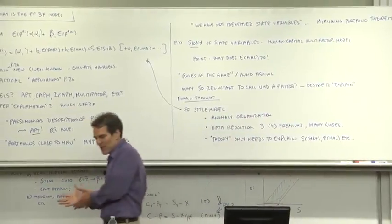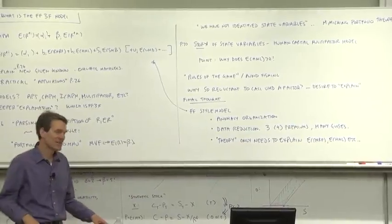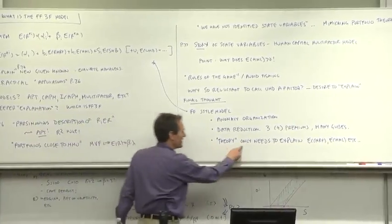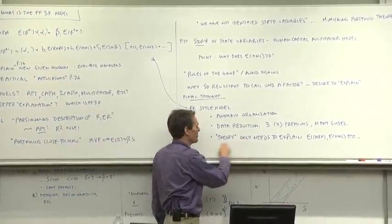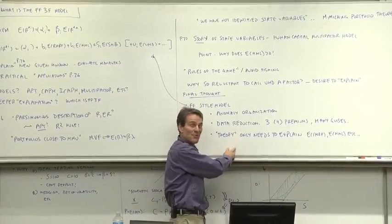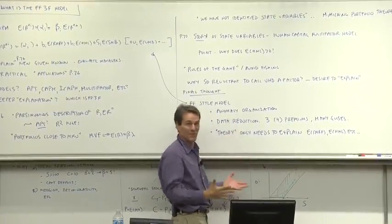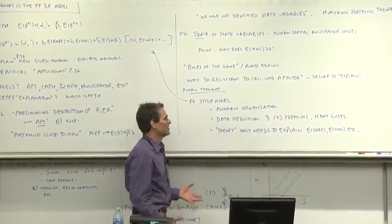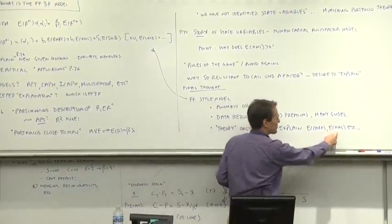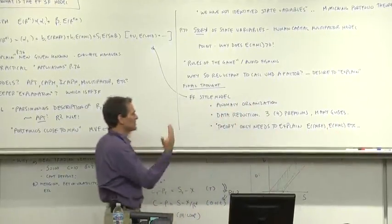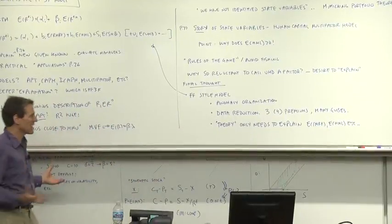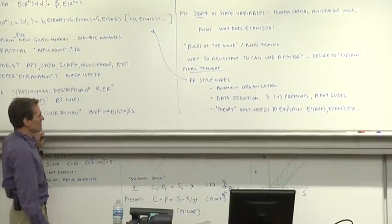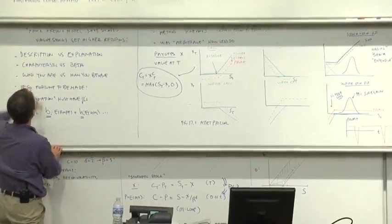A theoretical model doesn't have to explain all 25 portfolios. It only needs to explain the market, HML and SMB. And then the Fama and French model says, look, once you've done that, all this other stuff follows. That's a lesson that is forgotten. Many, many theoretical models then are tested on the 25 portfolios. But the whole point of Fama and French is you don't have to do that. We only have to understand these factor premiums. Given the factor premiums, all the anomalies fall into place. That's at least a simplification that makes our job easier going forward.